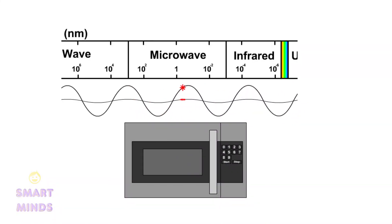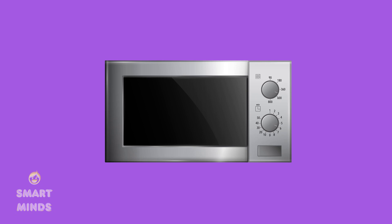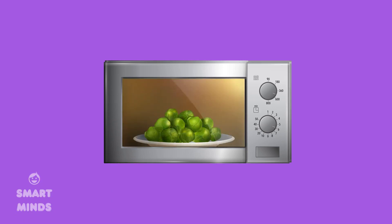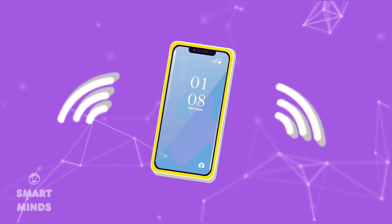Microwaves have a shorter wavelength and a higher frequency than radio waves, and are used for cooking food in microwave ovens, as well as for communication technologies like cell phones and Wi-Fi.